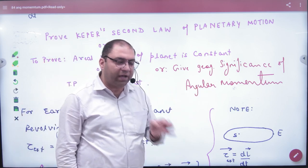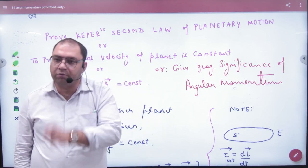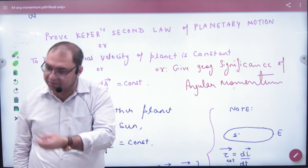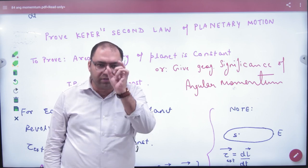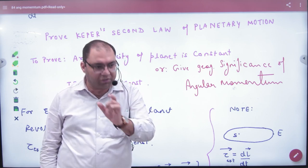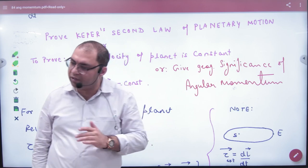Geometrical significance. What to prove? Areal velocity is a constant. So what are we going to do? We are going to prove the areal velocity constant. And what will we use? Angular momentum is constant. Angular momentum is constant. This topic is called geometrical significance of angular momentum.